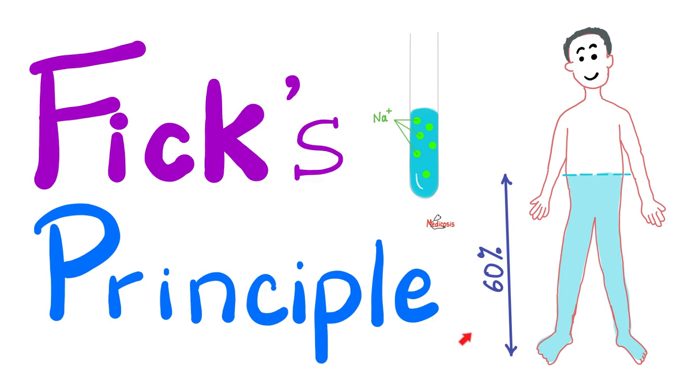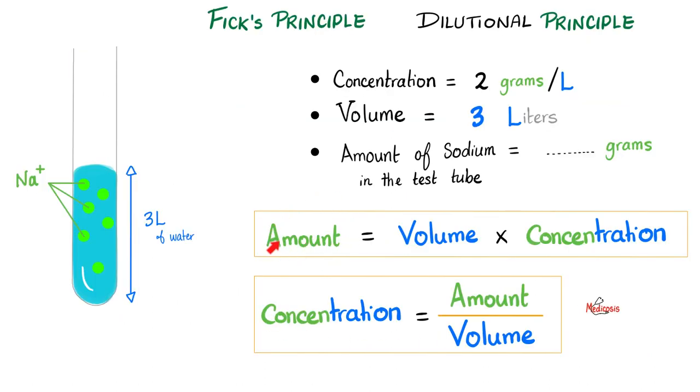And if you have watched my Fick's principle video in my physiology playlist, you will recall that amount equals volume times concentration. If I told you that you have three liters of water, each liter contains two grams of sodium, what's the amount of sodium in the entire three liters? The answer is six, of course. How did you do it? Three times two.